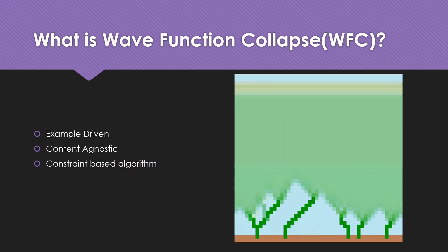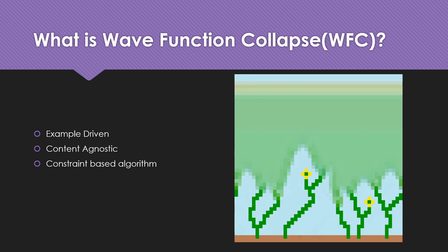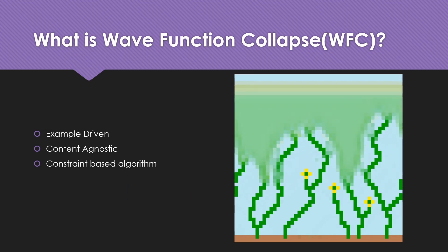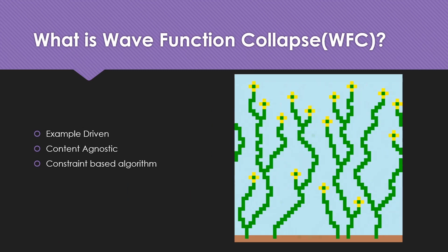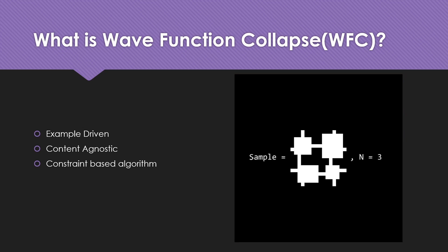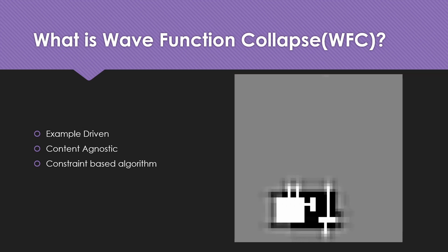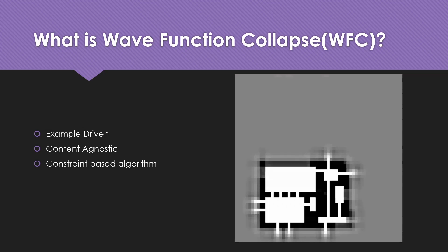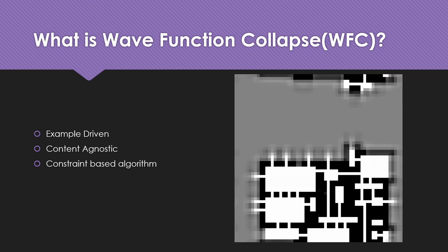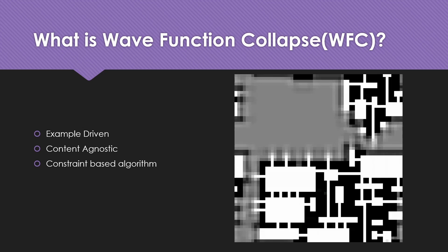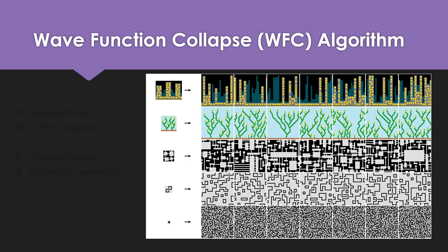Wave function collapse is another procedural content generation algorithm. However, it differs in that it is no longer noise-based. It is instead an example-driven, content-agnostic, constraint-based algorithm. Let us talk about these attributes further.